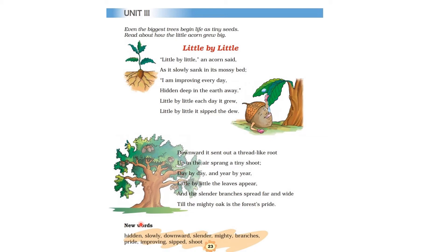"Mighty" means huge, big. "Branches" — can you see this? This is the trunk of the tree, and the branches grow from the trunk of the tree. These are called the branches, and this thick part here is the trunk. "Pride" means when you are satisfied with something — being content is called pride.